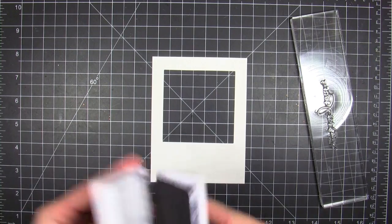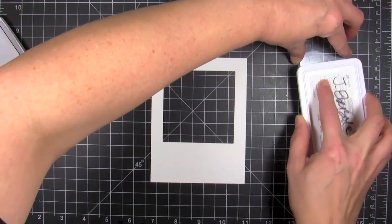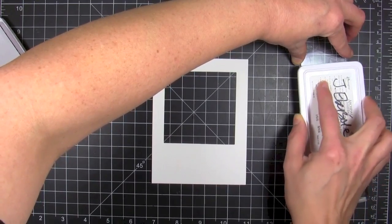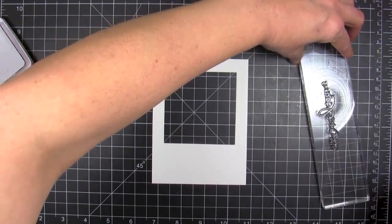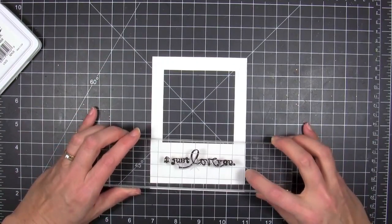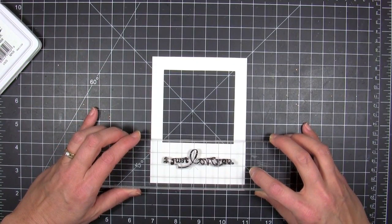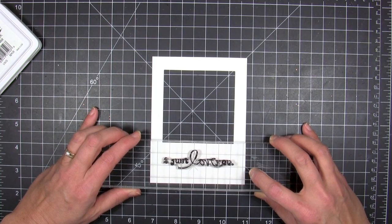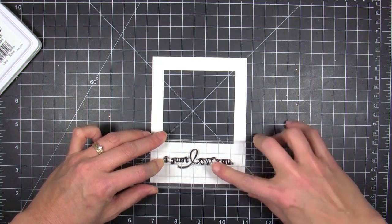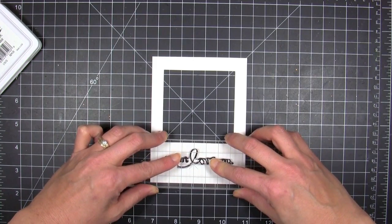Now I want to go ahead and stamp a greeting. I'm gonna use Archival, this is a nice black ink, it's waterproof so if it gets wet it's not gonna bleed or smear all over the place. I'm gonna use this really sweet sentiment, 'I just love you,' from a set by Ali Edwards for Technique Tuesday.